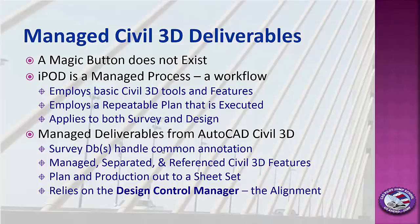Everything is managed and separated, as we saw, into multiple output drawings referenced from Civil 3D features, and then carefully dealt with to produce the output. It uses the plan production tools in Civil 3D and outputs to a sheet set, which you can publish either out of Civil 3D or employ in an AutoCAD workflow or in another application, as we saw. The entire process relies on the design control manager in Civil 3D, which is the alignment.